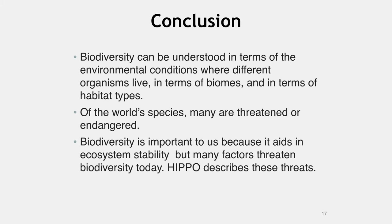In this chapter we learned about the various biomes — both terrestrial, marine, and freshwater. Biodiversity can be understood in terms of environmental conditions, biomes, and habitat type. We learned about the concept of biodiversity and noted that it is important to protect biodiversity for aesthetic reasons, but also because biodiversity may provide improved food and medicine and can stabilize ecosystems. We learned that one of the greatest threats to biodiversity is human beings, and that the acronym HIPPO is a way to understand how humans impact biodiversity. Lastly, we learned about ways to protect biodiversity by managing natural resources intelligently.